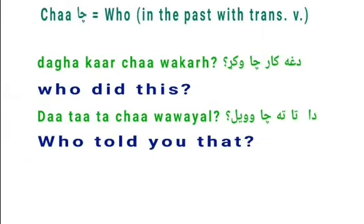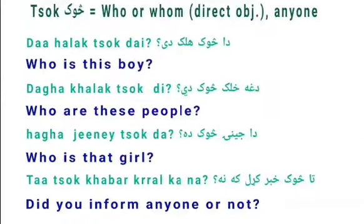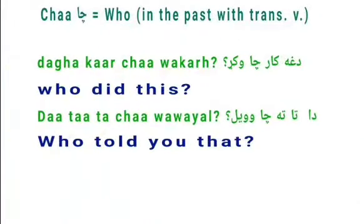The next, similar pronoun is 'Cha'. Cha also means 'who', like Tuk, but it is used in the past tense with transitive verbs. For example: 'Cha Da Wakar' means 'Who did this?' 'Cha' means who, and 'Wakar' means did. This sentence is in past tense, so Tuk changes to Cha. 'Wakar' comes from 'Kaval', meaning 'to do', which is a transitive verb because you do something to an object.